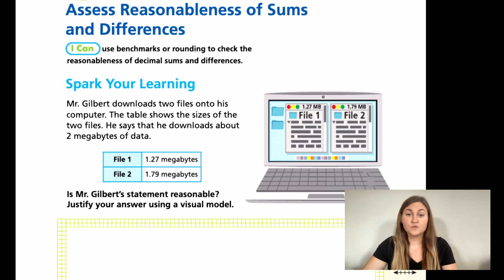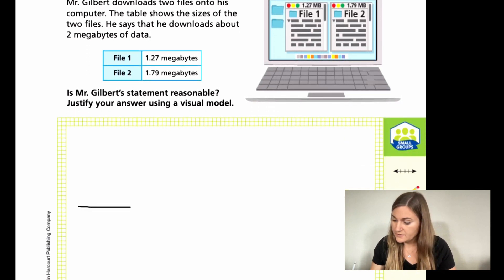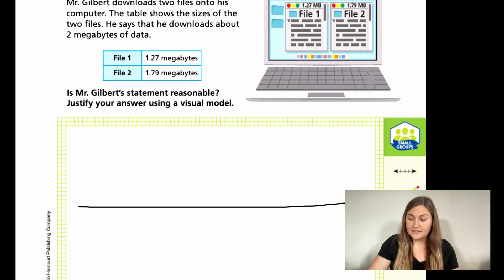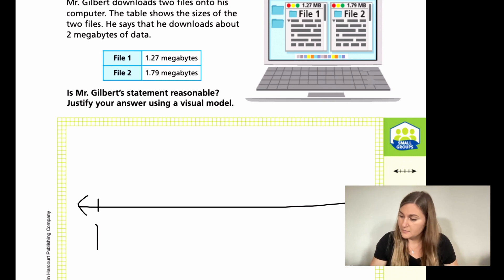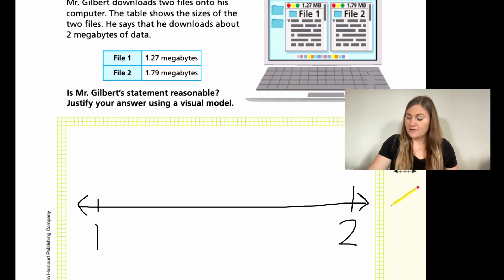It says, is Mr. Gilbert's statement reasonable? Justify your answer using a visual model. So the visual model that the teacher answer key shows is a number line. So I decided to stick with that. So on a number line, if I am going to be dealing with 1.27 and 1.79, I know those numbers are between 1 and 2. So I'm going to have the beginning of my number line be 1.